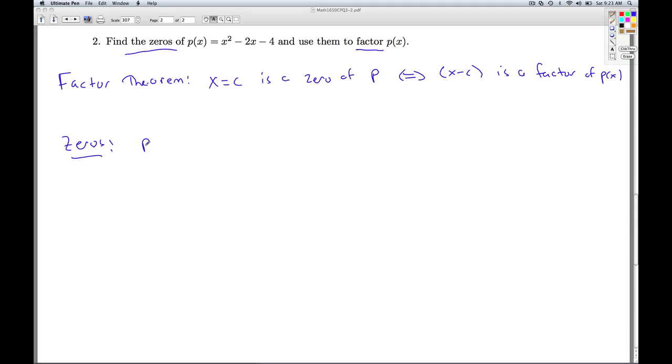The way we find the zeros of a polynomial, we set the polynomial equal to 0. So we're setting x squared minus 2x minus 4 equals 0. This is a quadratic equation. We try to factor it nicely, it doesn't work. So we're going to resort to the quadratic formula. The quadratic formula is the opposite of b, plus or minus the square root of the discriminant, b squared minus 4ac, all divided by 2a.